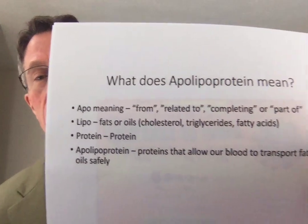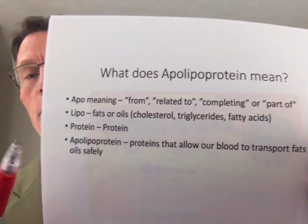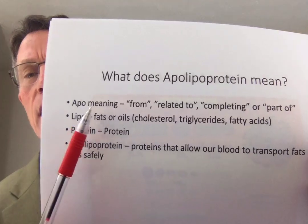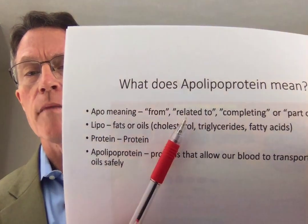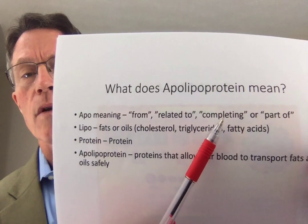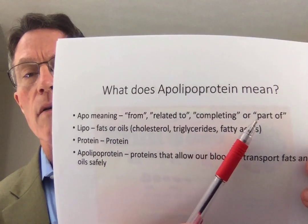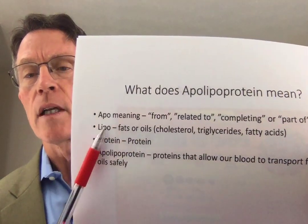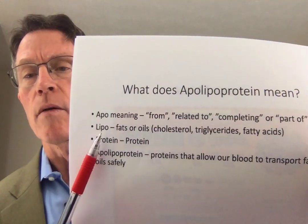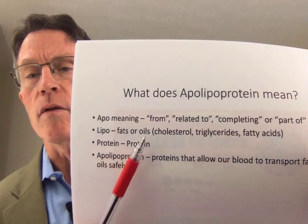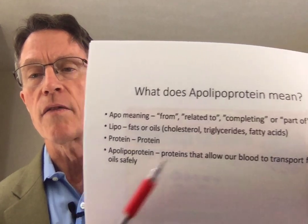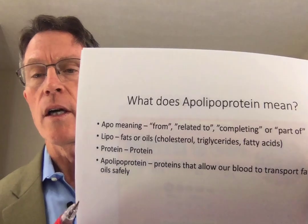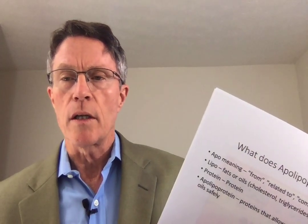Let's break it down and it starts to make sense. Apo is a prefix that means from, related to, completing, or part of. Lipo means fats or oils — the cholesterol, triglycerides, and fatty acids that you saw in the lipoprotein.